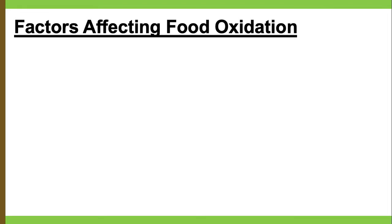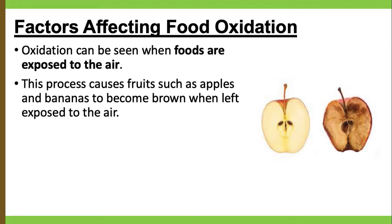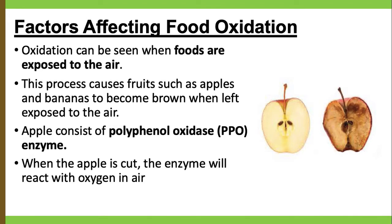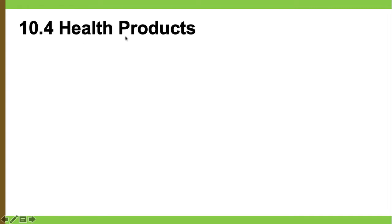Oxidation also happens to food. Oxidation can be seen when food is exposed to air. This process causes fruits such as apples and bananas to become brown when left exposed to air. Apples consist of the enzyme polyphenol oxidase (PPO). When the apple is cut, the enzyme reacts with oxygen in the air. The oxidation process produces melanin, which turns the apple brown.